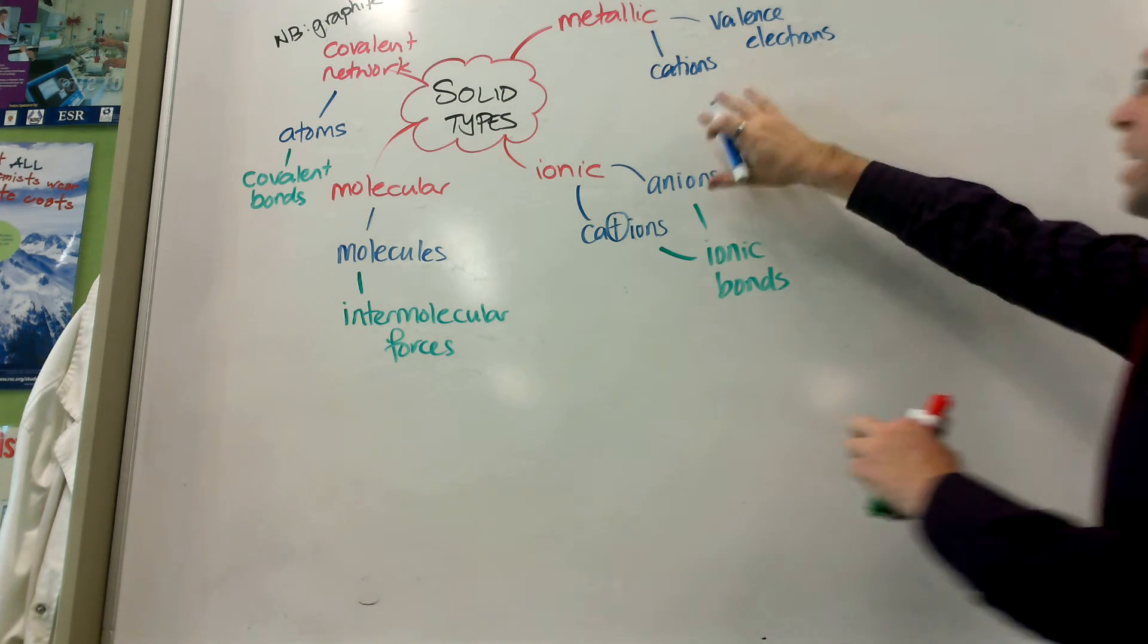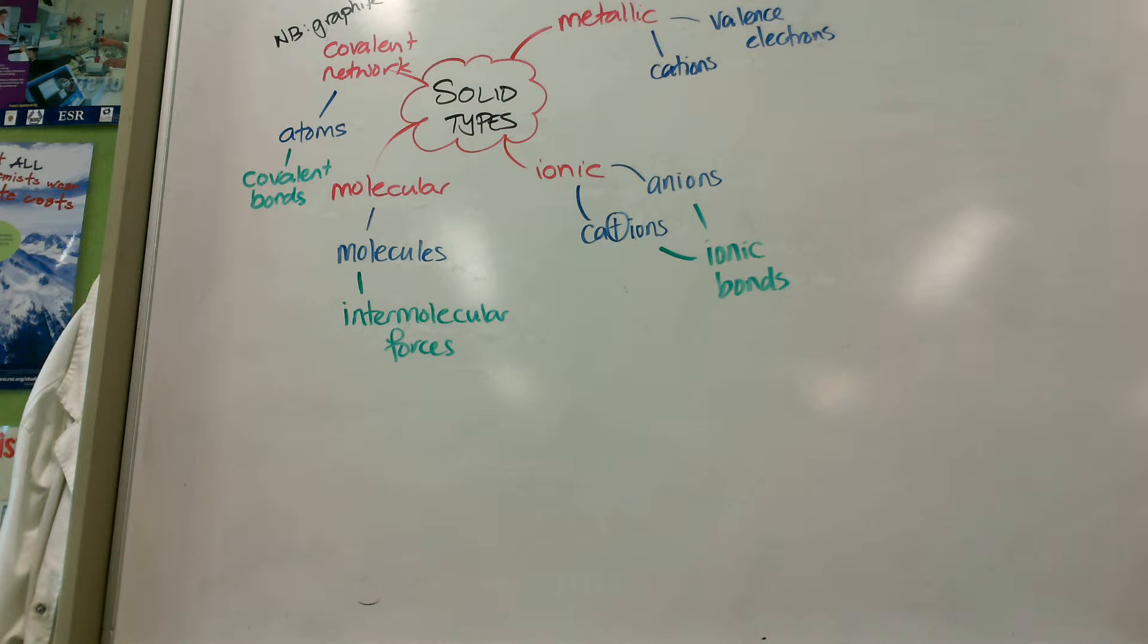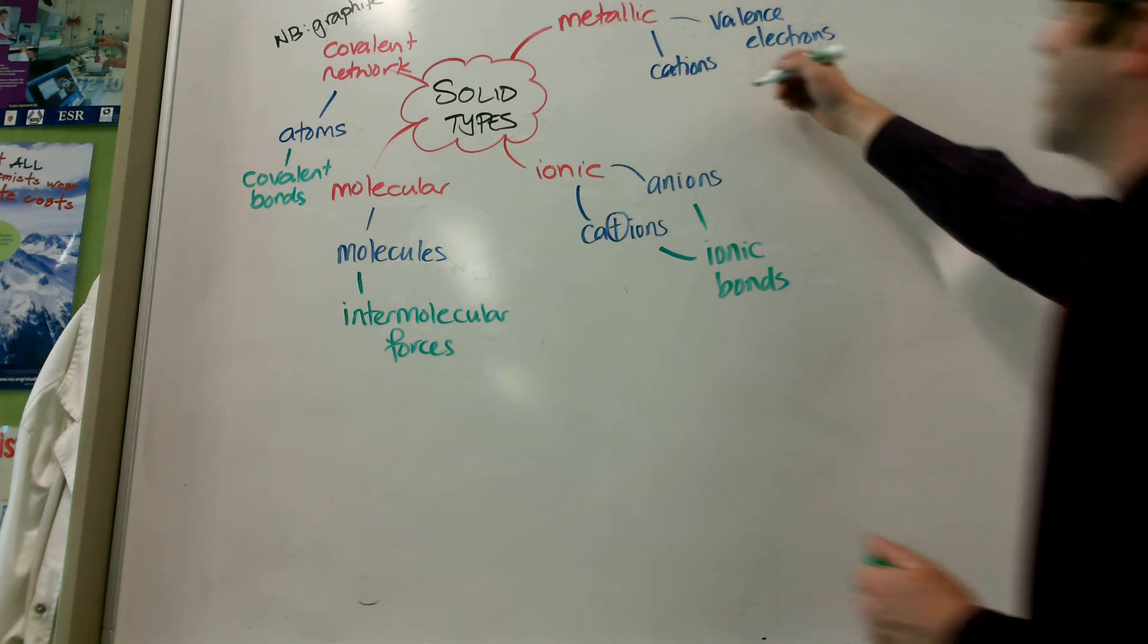You can call them atoms in an exam. That would be classed as correct. So what creates the relationship between these that actually holds it together as a solid? Because, I mean, you know, electrons are tiny. Charges. The charges, it is. It's an electric attraction. And what do we call that electric attraction? Remarkably easy name considering that it's a metallic solid. Metallic bond. Well done.